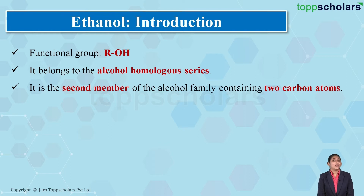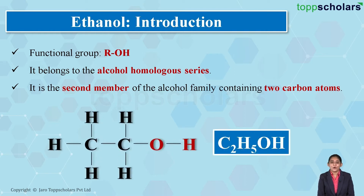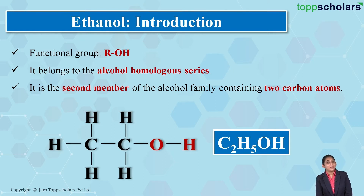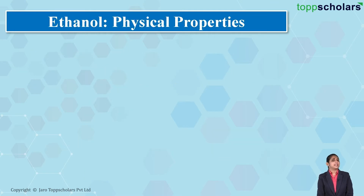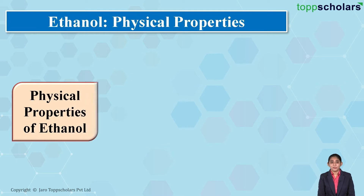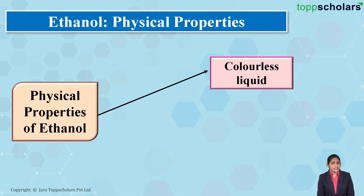Two carbon atoms means that ethanol is the second member of the alcohol family. From the molecular formula of ethanol, we can see that ethanol comprises two carbon atoms, and so it is the second member of the homologous series of alcohol.